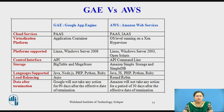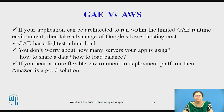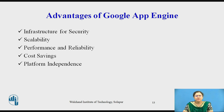These are the key differences between GAE and Amazon. If your application can be architected to run within the limited Google App Engine runtime environment, then take advantage of Google's lower hosting cost. If you need a more flexible deployment platform, then Amazon is a good solution. GAE has a lighter admin load compared to Amazon — you don't worry about how many servers your app will use, how to share data, or how to load balance.